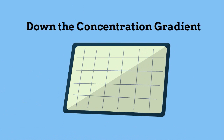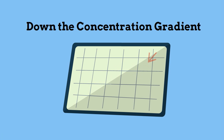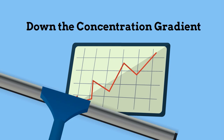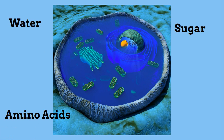Facilitated diffusion is a way to use passive transport and move larger objects and ions into and out of the cell, much like sugar, proteins, and ions.